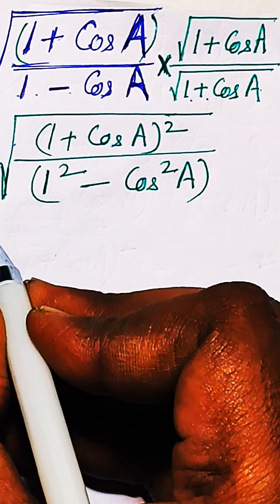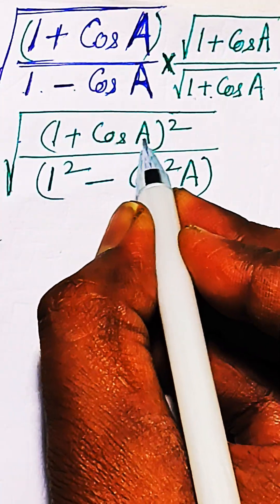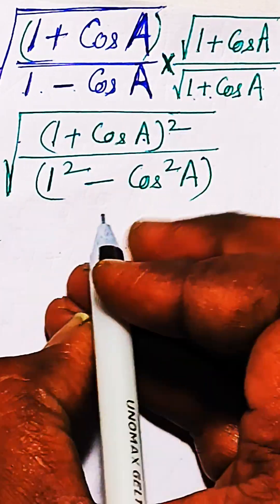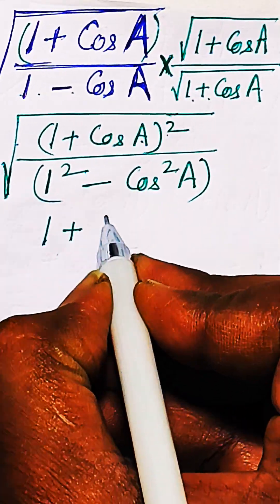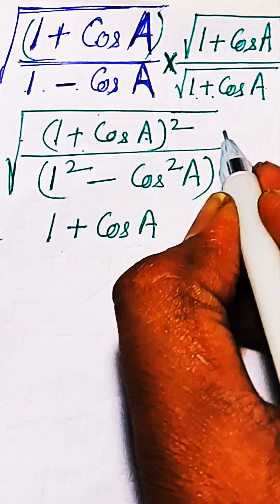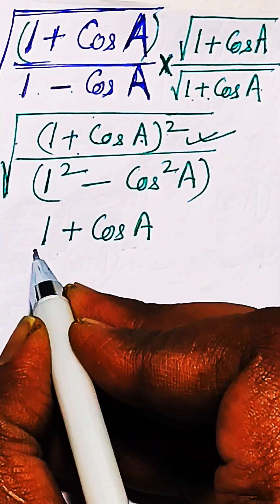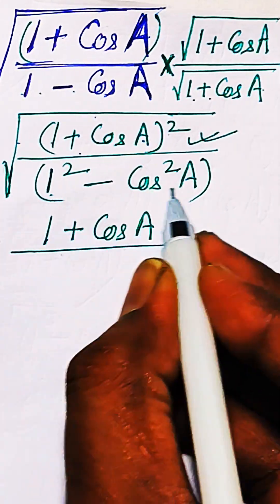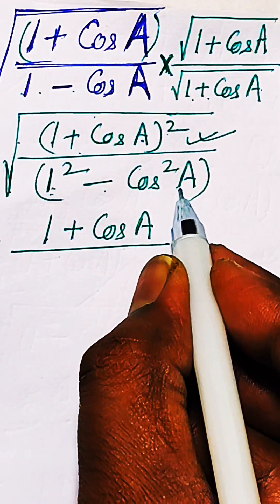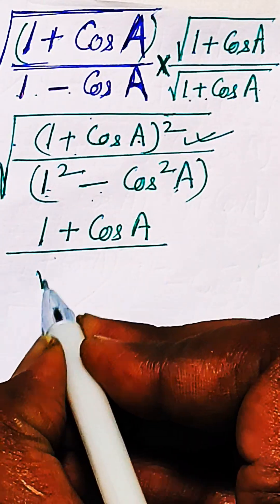You can see (1 + cos A) is appearing twice inside the square root, so we can bring (1 + cos A) out of the square root from the numerator. And from the denominator, (1 - cos² A) is nothing but sin² A.